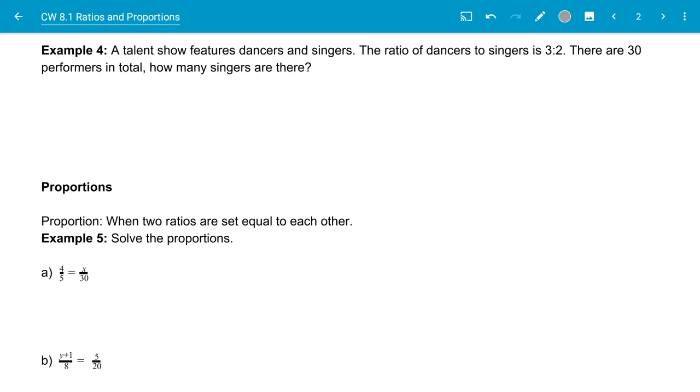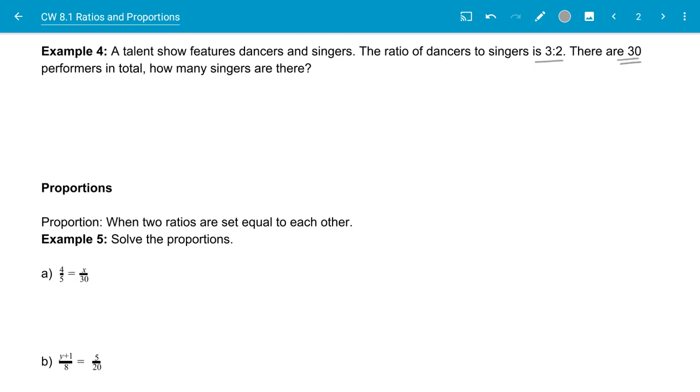In this example, a talent show features dancers and singers. The ratio of dancers to singers is 3 to 2. There are 30 total performers in the group, and we need to know how many singers there are.